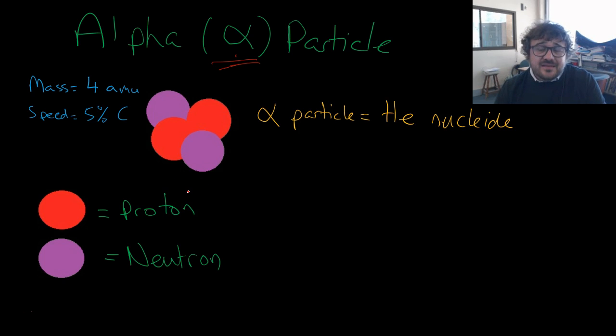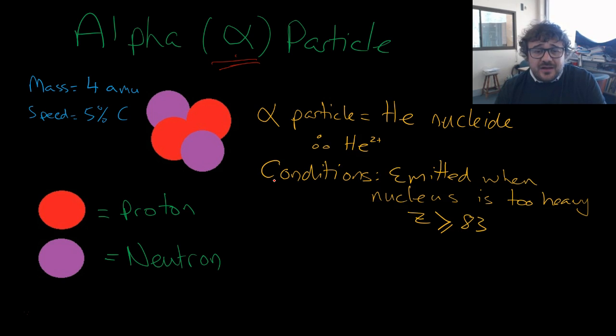Basically, it's a helium nuclide. Nuclide is just another word for nucleus. The conditions - this will be emitted when the nucleus is too heavy, that is, when Z is equal to or greater than 83.